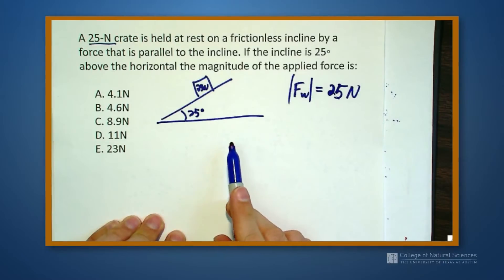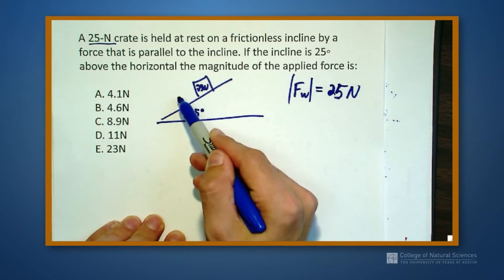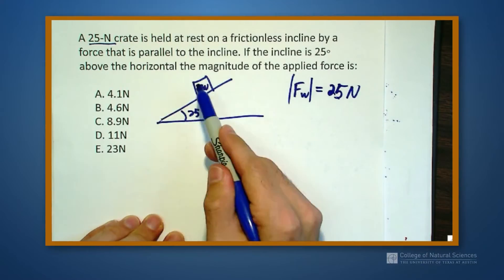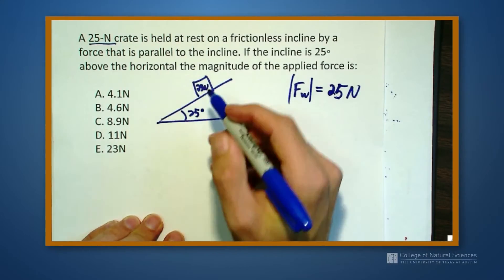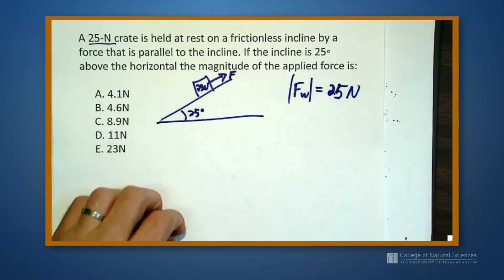And I'm holding it on there by a force parallel to the incline. So the force is either up or down the ramp. Well, if I put this block on the ramp, it's going to slide down the ramp. So in order for me to keep it from going down the ramp, I have to put an upward force up the ramp. So that's going to be my applied force.